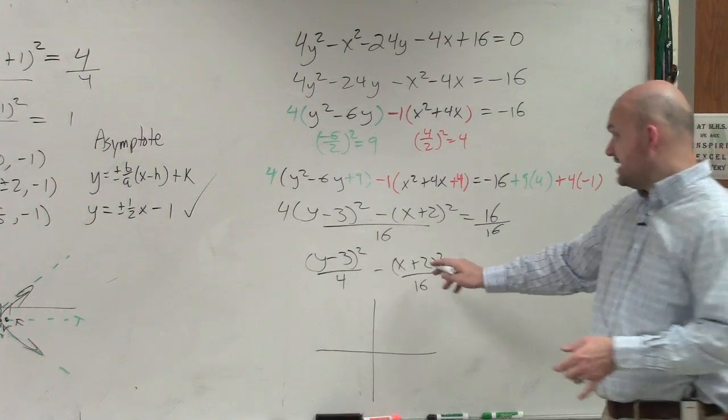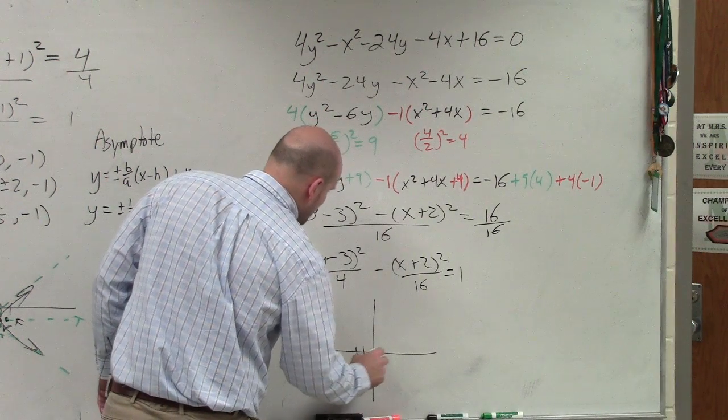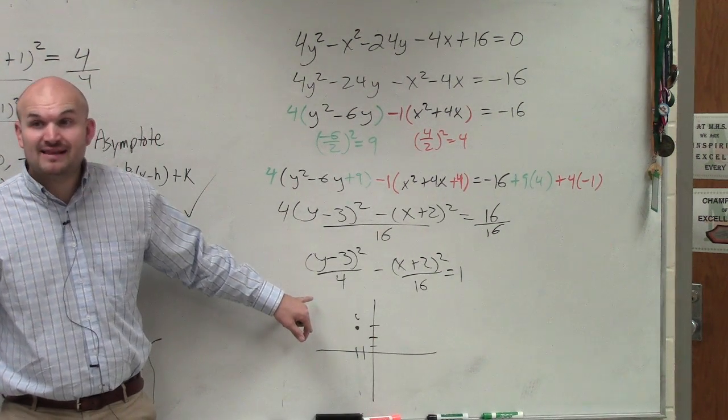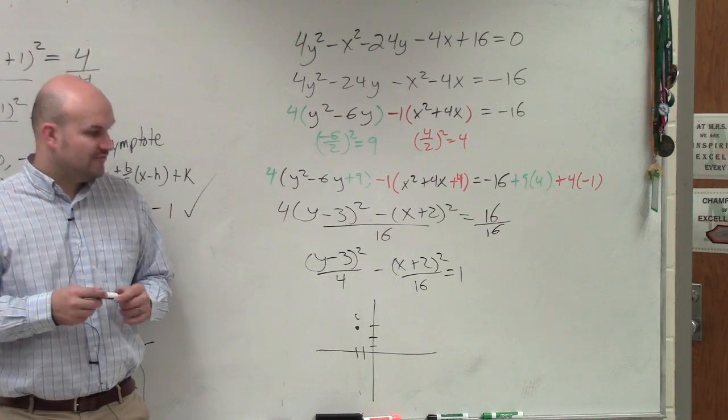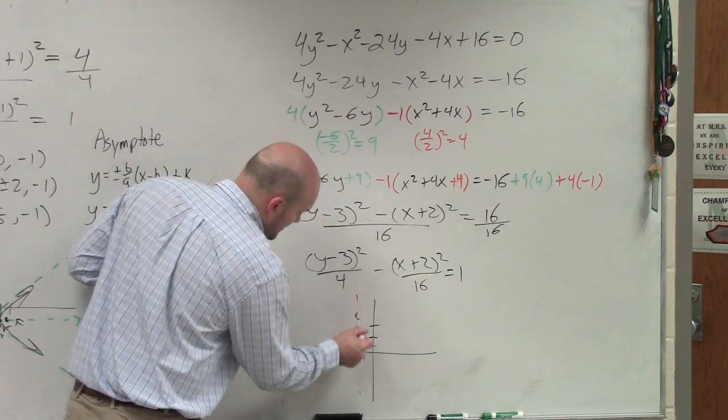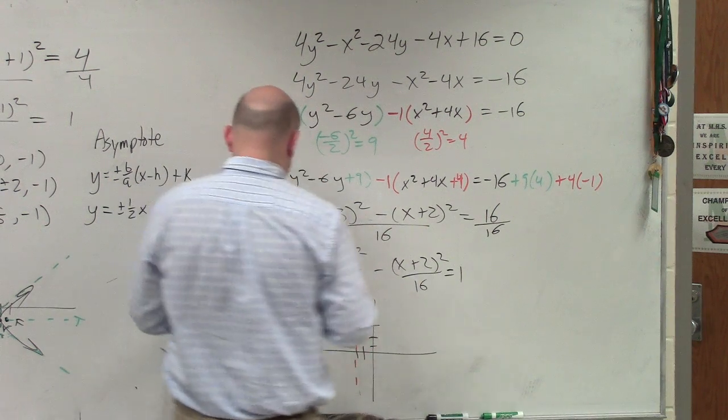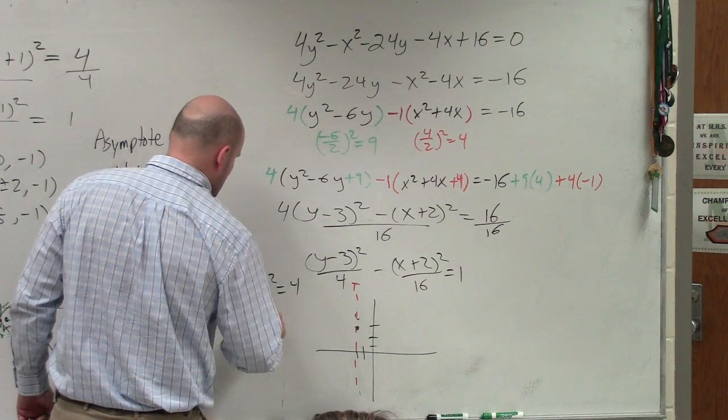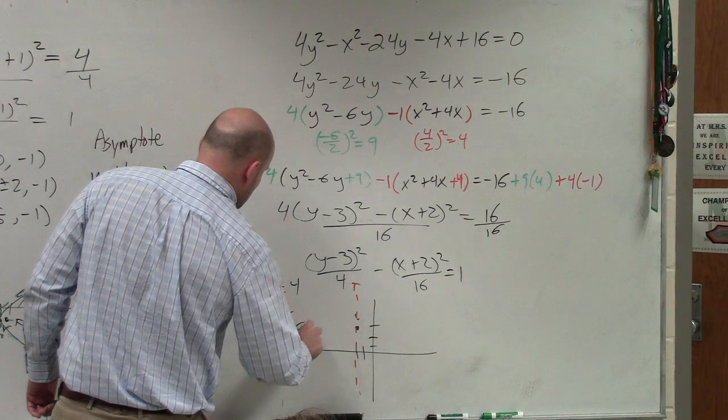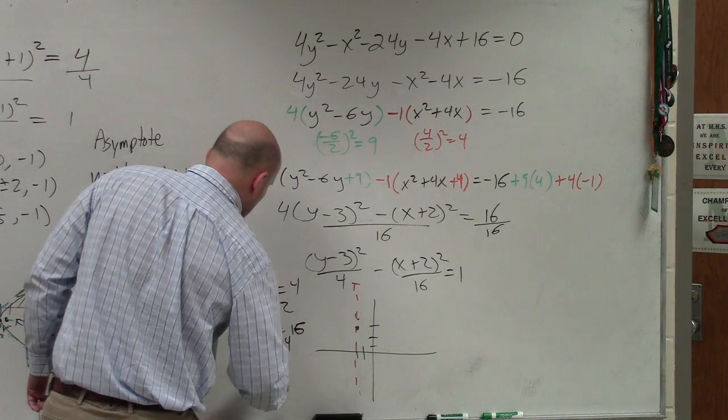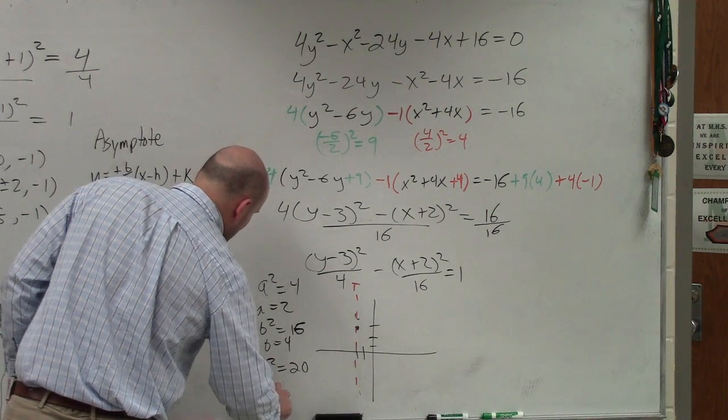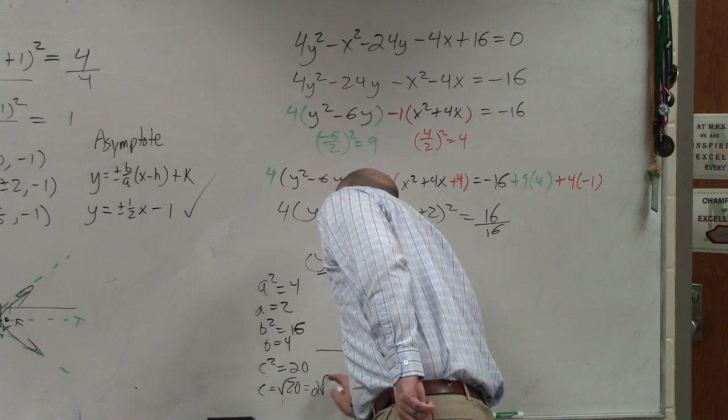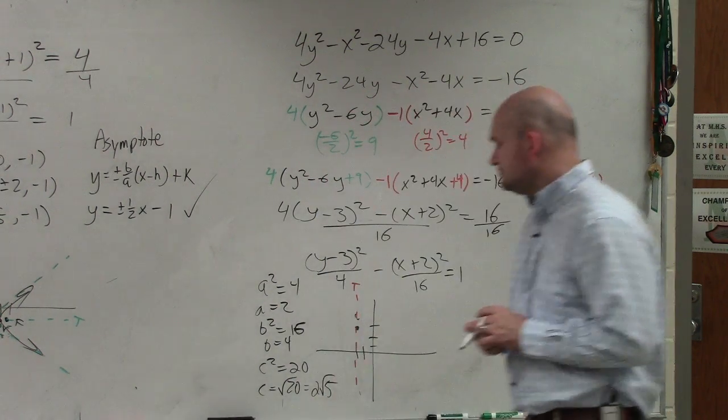So let's find the center. The center here is at (-2, 3). Right? My a² is under my y. That means my transverse axis is vertical. So let's sketch that in there. OK? Let's see here. My a² is not 16 but it's 4, so that means a = 2. My b² is 16, so that means b = 4. And my c² is 20, so therefore c = √20, which you guys should be very familiar with. Simplified radical is 2√5.